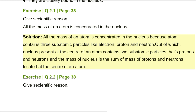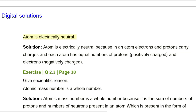Exercise Q2.2, page 38. Give scientific reason: Atom is electrically neutral. Solution: An atom is electrically neutral because electrons and protons carry charges, and each atom has equal numbers of protons (positively charged) and electrons (negatively charged).